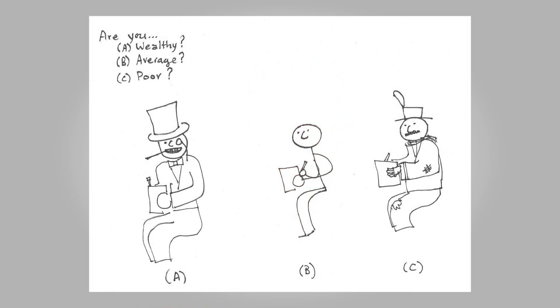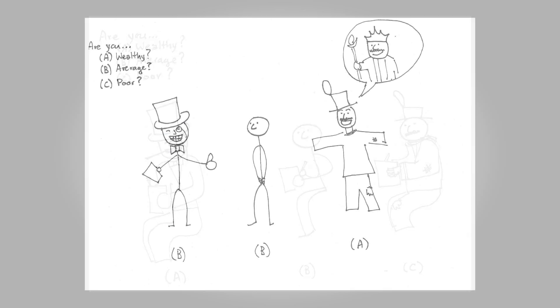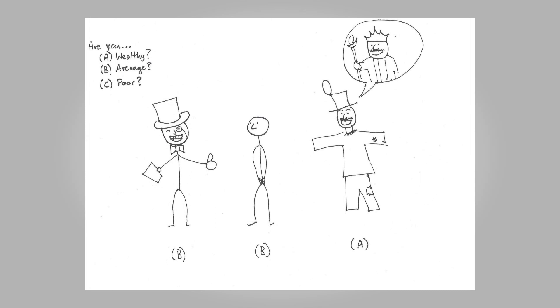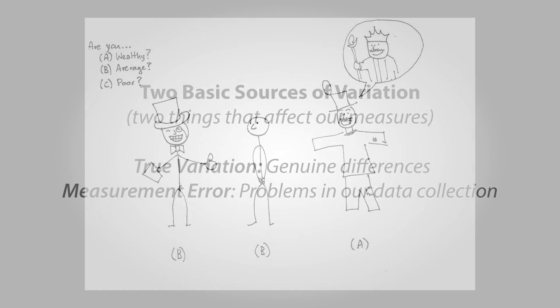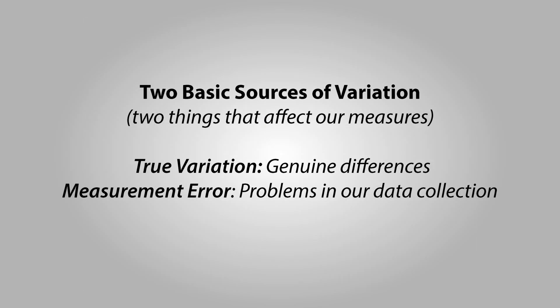In a research project, people will give different answers to your questions. That's a good thing. People are genuinely different, and part of the reason that we're asking these questions is to find out how they're different. At the same time, the answers you receive are not just a product of people's genuine differences. Perhaps a good place to start when discussing measurement problems is to differentiate two sources of variation, two reasons that people give the scores they give, and why people give different scores.